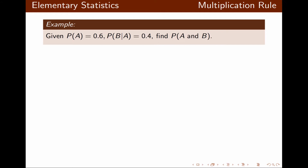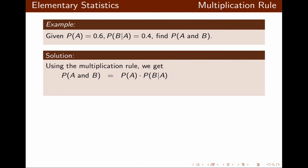In this example, probability of A and probability of B given A are given to us and we want to find probability of A and B. Using the multiplication rule we multiply probability of A and probability of B given A, so the final answer is 0.24.